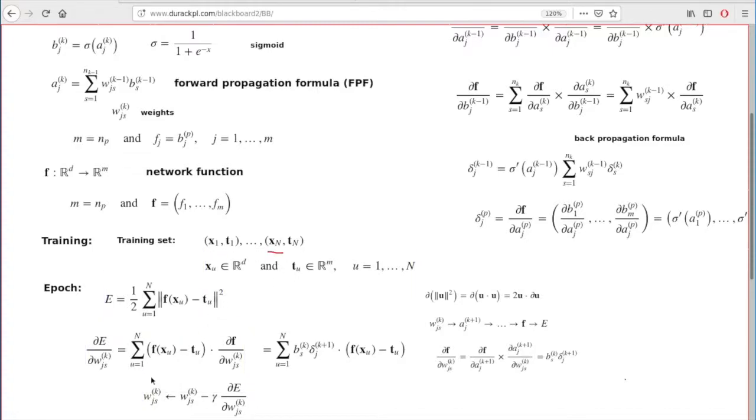For every input vector in your training set, you compute the f values, which means you run your forward propagation formula, all of these recursive relations, capital N times for every input to find these pieces. And to find these deltas, you will run the back propagation this many times for every node to find all of these deltas for all of your inputs. I emphasize, neither of these factors reflect the fact that they depend on this u index. For every different u index, for every different input in your training set, you will have different sets of b's and deltas. And all of these must be computed to find these weight derivatives in one single epoch.